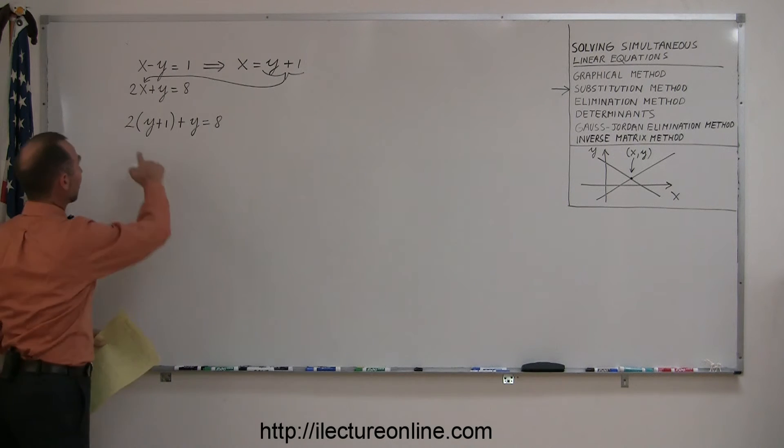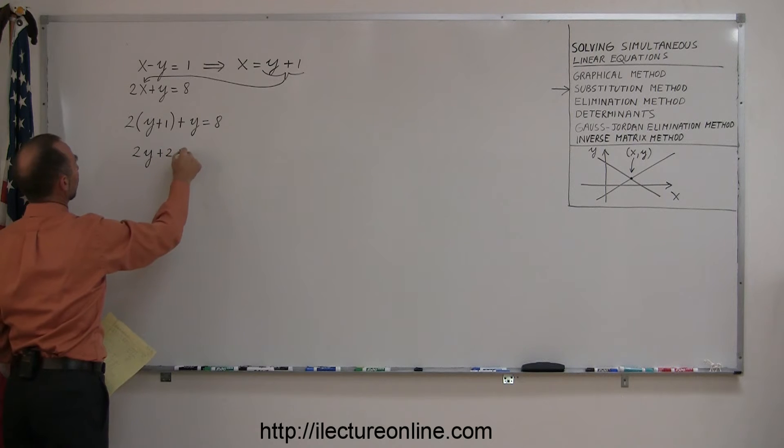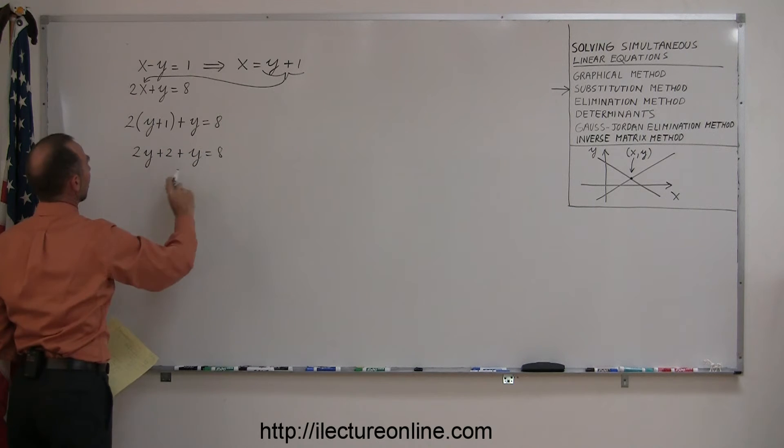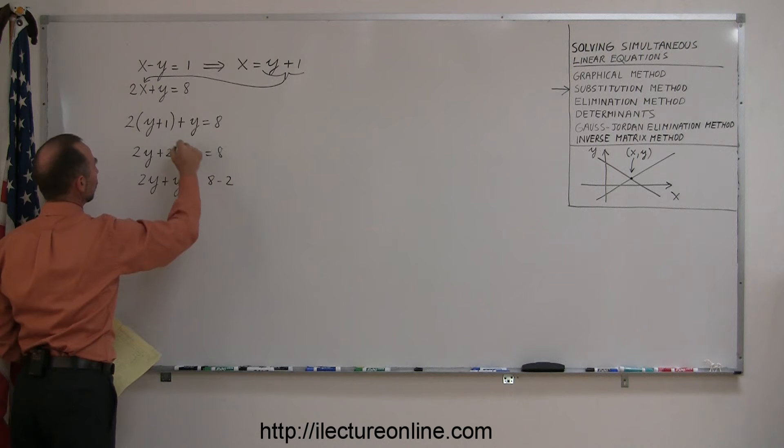All right, again, you have parentheses, you want to get rid of them, so you multiply the 2 times the y and the 1, that gives you 2y plus 2 plus y equals 8. Moving all the numbers to one side, leaving all the y's on the left side, that gives you 2y plus y equals 8 minus 2. Notice the 2 goes across, changes the sign.